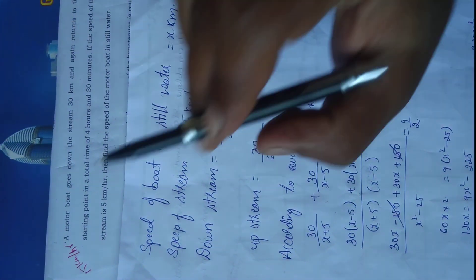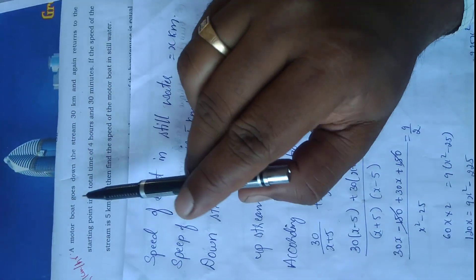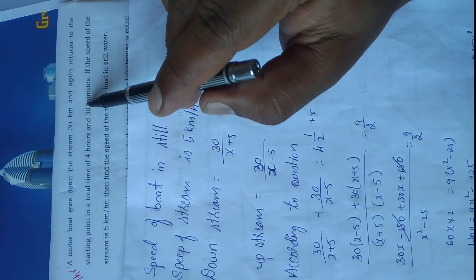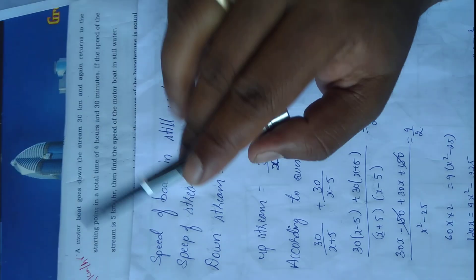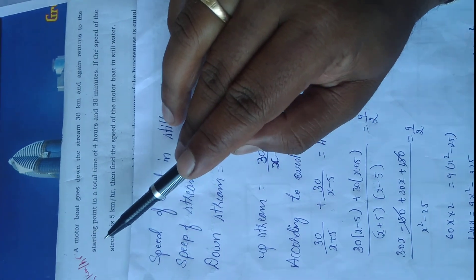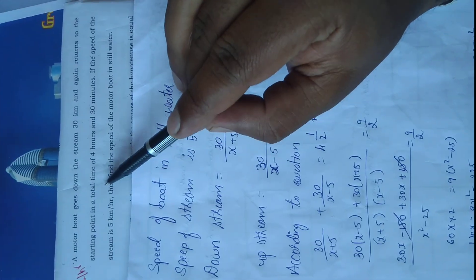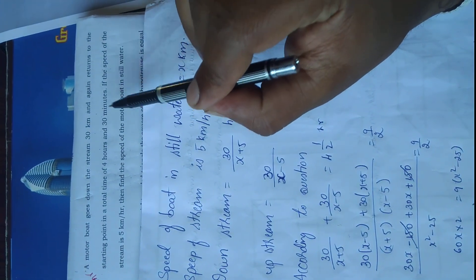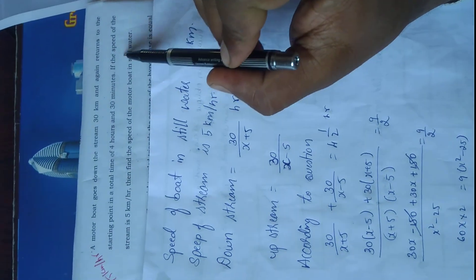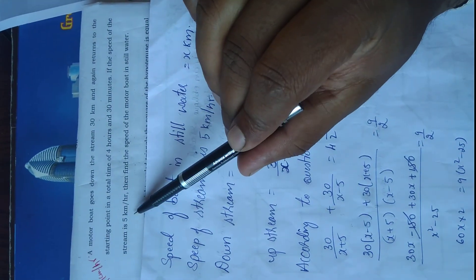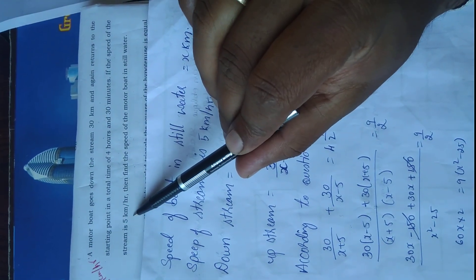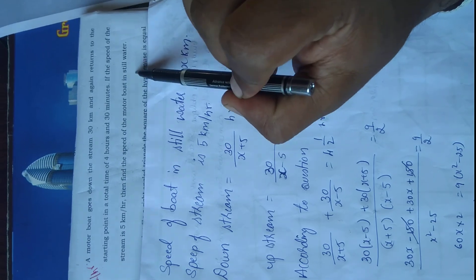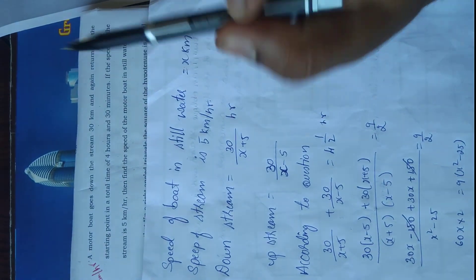In this question, a boat goes downstream 30 kilometers and again returns to the starting point in a total time of 4 hours and 30 minutes. If the speed of the stream is 5 kilometers per hour, find the speed of the motorboat in still water.